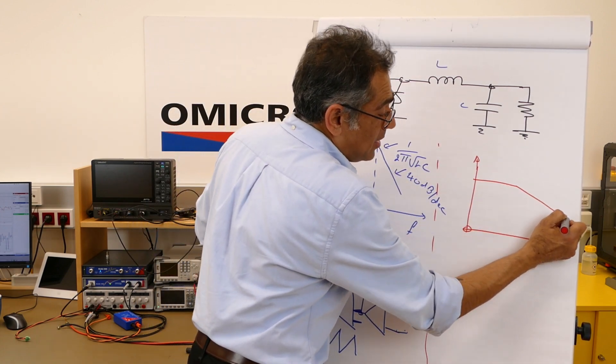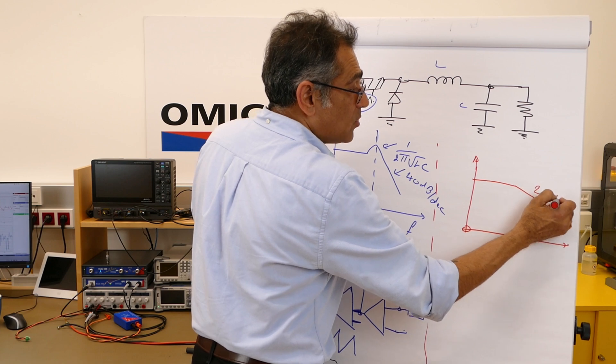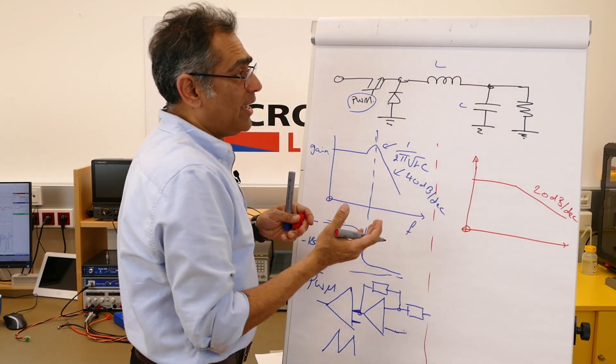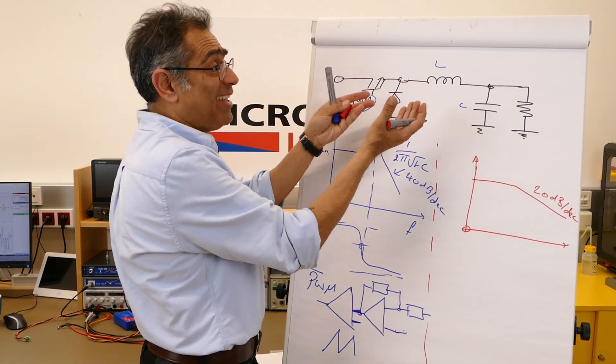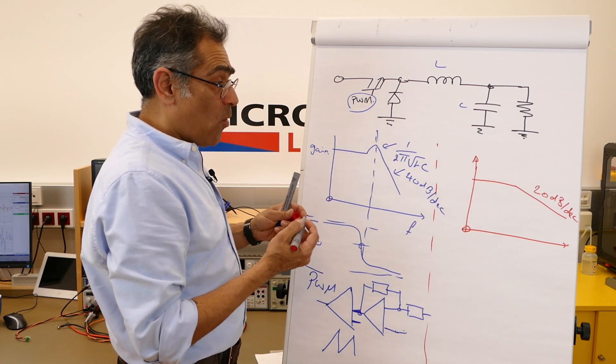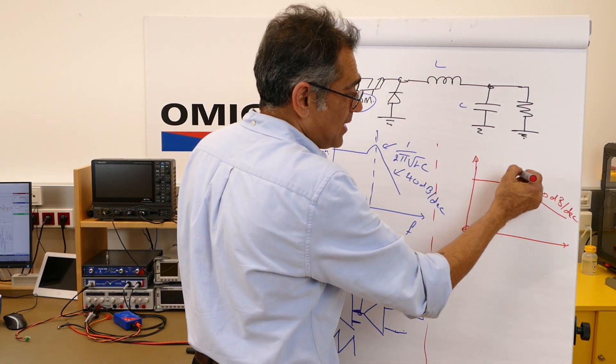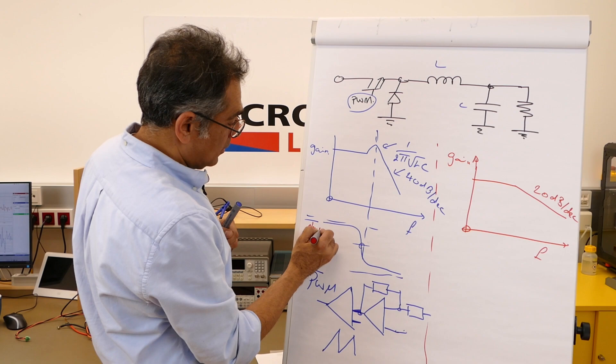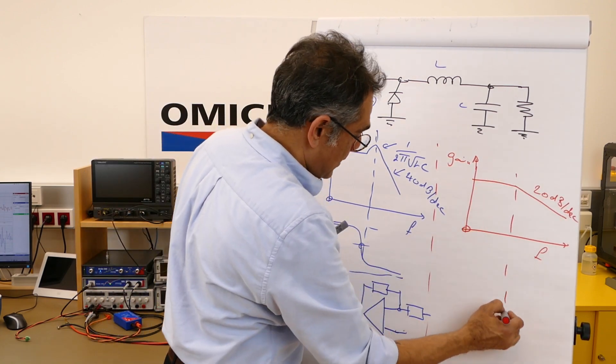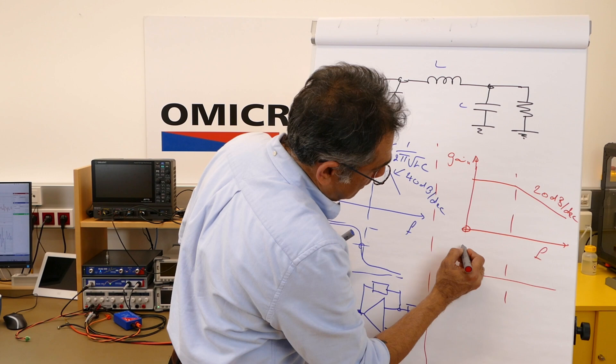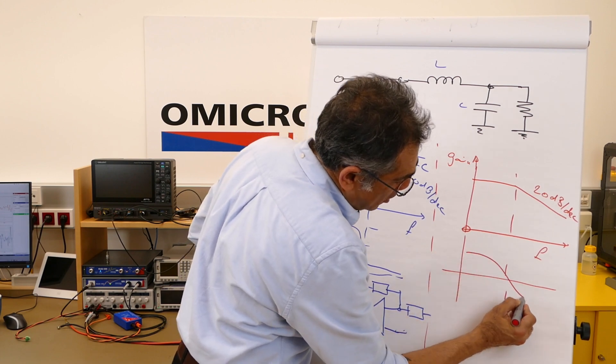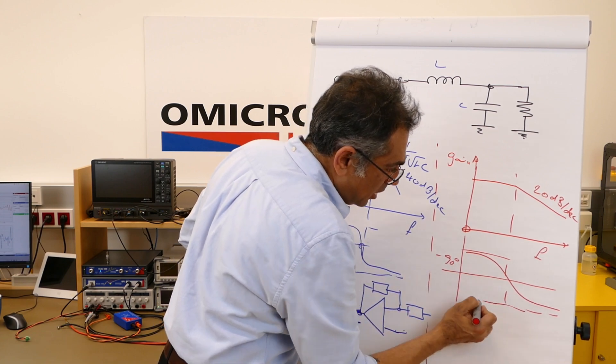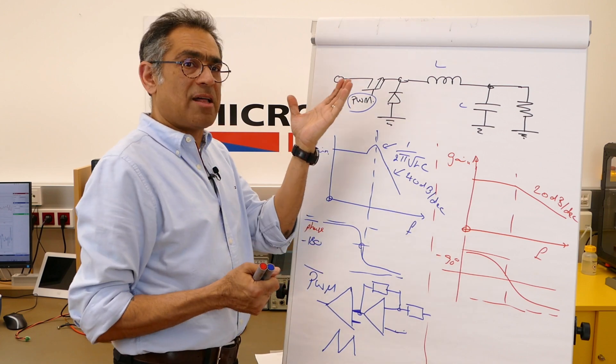There is no resonant bump at all, and instead of going at 40 dB per decade, it goes at 20 dB per decade. It looks like the inductor is not in the picture. However, physically it clearly is. So what is happening? If you look at the phase also—that is frequency, that is gain, this is phase—you will see that at this point the phase is going down only by 90 degrees, minus 90 degrees. So in a current mode controller, it looks like the inductor is not there.